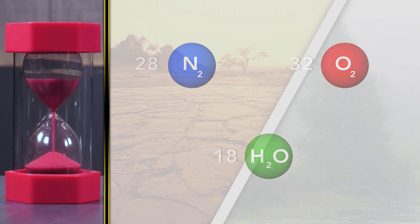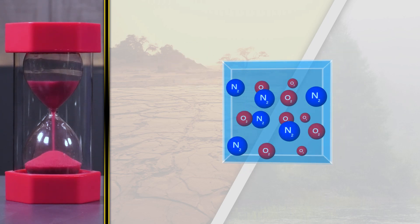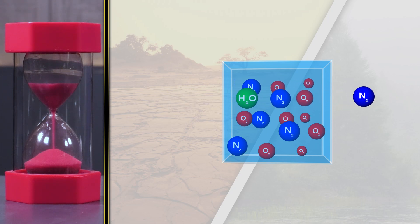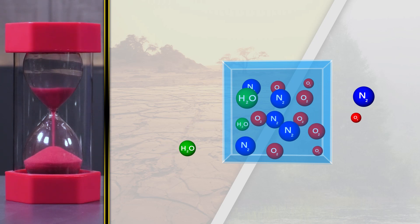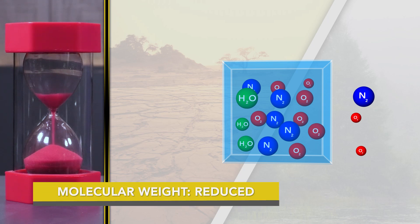And that brings us back to Avogadro. If we imagine some volume of air, we know it contains a fixed number of molecules. If we introduce water vapor, something has to leave that volume to make room. So for every molecule of water vapor that enters the volume, a heavier, more dense molecule of oxygen or nitrogen must leave. As we replace oxygen and nitrogen in the air, the molecular weight of that air parcel is reduced, creating less dense air. That's why moist air is less dense than dry air.